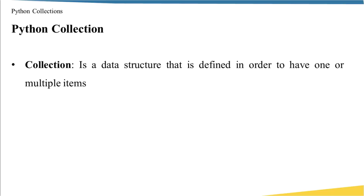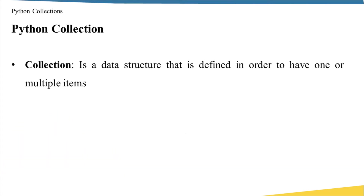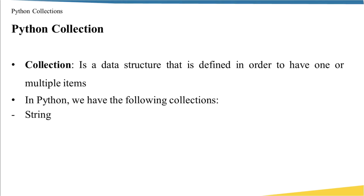What is a Python Collection? A collection is a data structure defined to have one or more than one item. You have to know that a collection is different from numbers, in which we can store only one item. Keep in mind that the item inside a collection could be a number or another collection, and this depends on the collection itself. In Python, we have the following collections: string, list, tuple, dictionary, and set. Each one of these collections has its own features, and over time you will learn in which context to use each one.